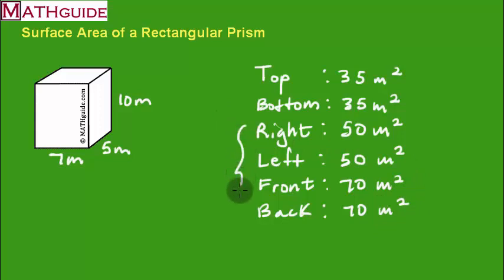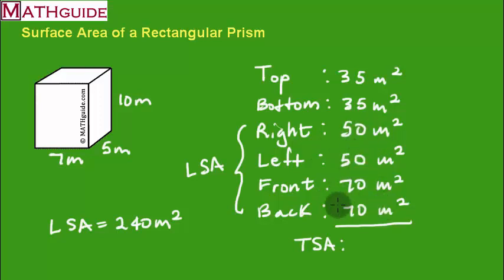Now, again, remember, if you wanted just the lateral surface area, I'm going to abbreviate that, lateral surface area, you would include everything except the top and the bottom. So I would add those up. So let's see, that would be 140 plus 100, so that would be 240. So my lateral surface area is 240 meters squared, because I'm just adding up these four numbers. All right, but I'm interested in the total surface area. So what's the total surface area? Well, you're just going to add all of them together. So remember, we just already added these. 140 plus 100 was 240. Now I'm going to add another 35 plus 35, which is 70. So I'm really just going to tack on 70 on this.